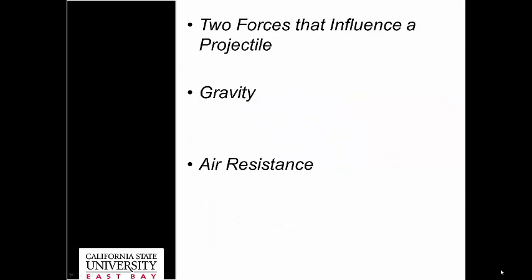Alright, so on to the nuts and bolts. Projectile motion is fairly straightforward, even though in your e-book there's a lot of equations that could look overwhelming, but it's not. The main thing is that two forces influence a projectile. One of those is gravity, so it's always acting down — 9.8 meters per second squared — pulling down whatever projectile is being thrown or kicked.